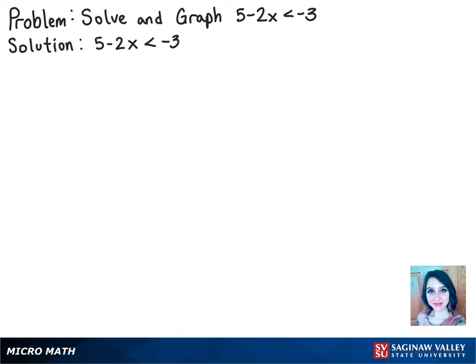So the first thing we can do here is subtract 5 from both sides, so that will give us negative 2x is less than negative 8.